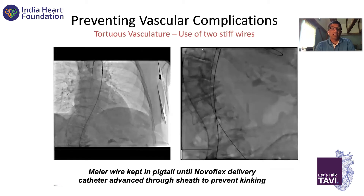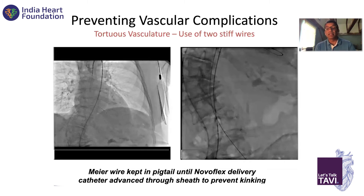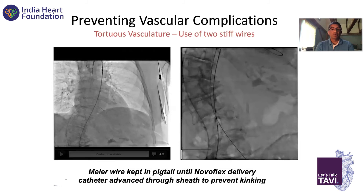And you see it straightened very quickly and easily, and the sheath went up. I do this probably once a month. Sometimes you can injure the abdominal aorta, so I want to make sure people understand that concept — putting those two stiff wires when you have abdominal aortic tortuosity.